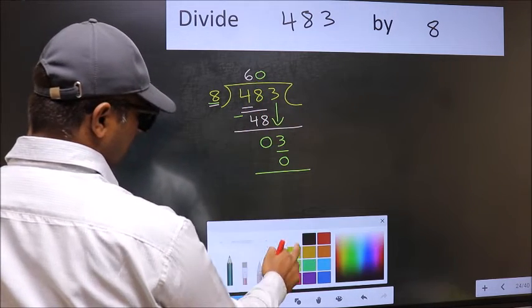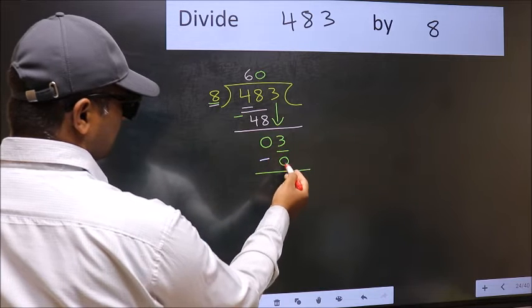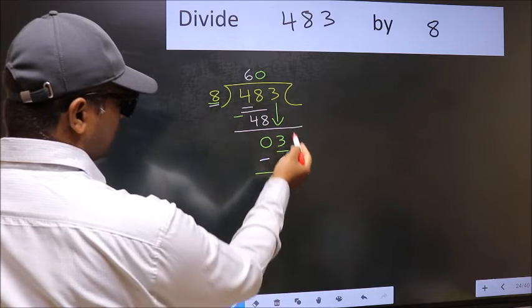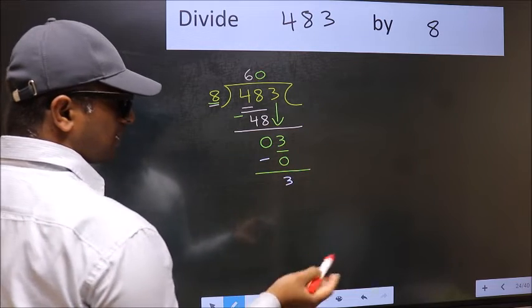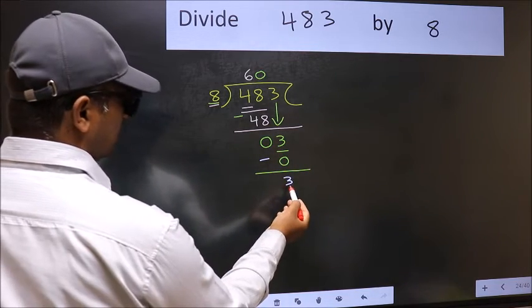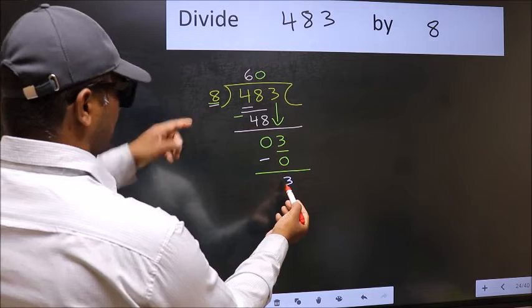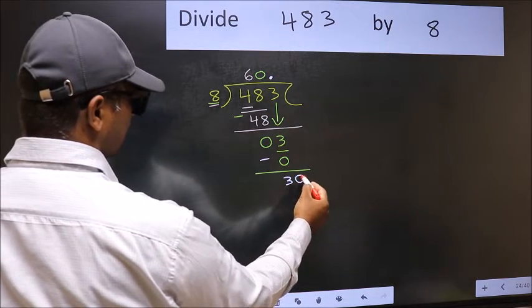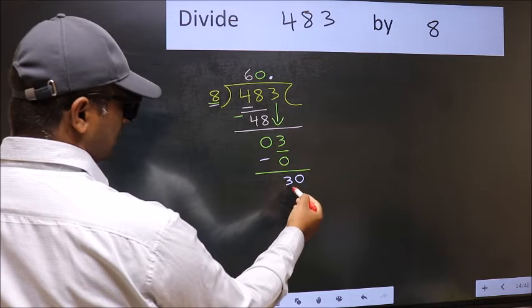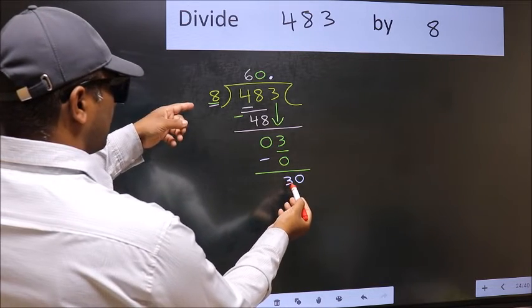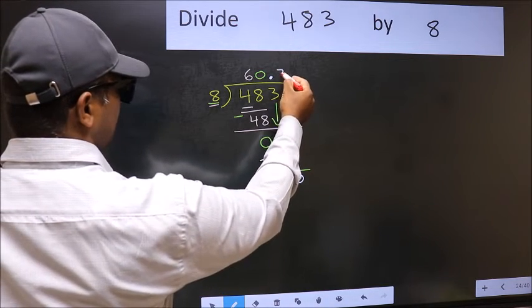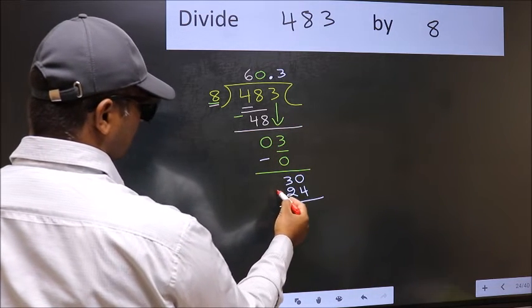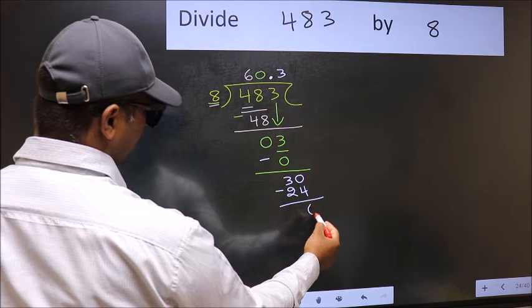Now you should subtract. 3 minus 0, 3. Over here, we did not bring any number down, and 3 is smaller than 8. So now you can put dot and take 0. So 30. A number close to 30 in 8 table is 8 threes, 24. Now you should subtract. We get 6, and continue the division. I am not doing that.